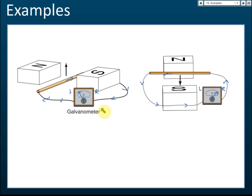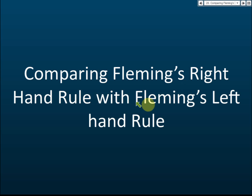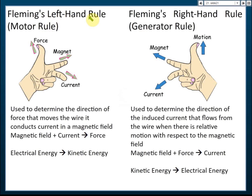Make sure you know this, because finding the direction of the current using Fleming's right hand rule is a frequently asked exam question. Comparing Fleming's right hand rule with Fleming's left hand rule: Fleming's left hand rule is called the motor rule — it's used to find the direction of force for a current-carrying conductor in a magnetic field. Fleming's right hand rule is called the generator rule — it's used to find the direction of induced current when a conductor cuts the magnetic flux.